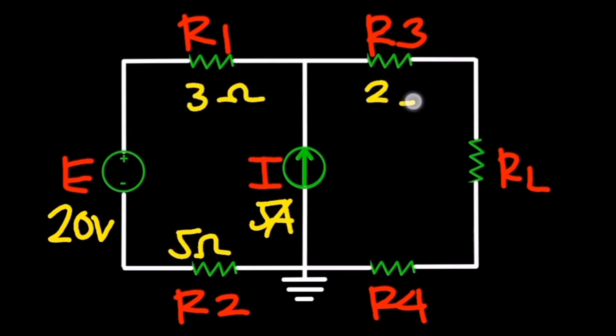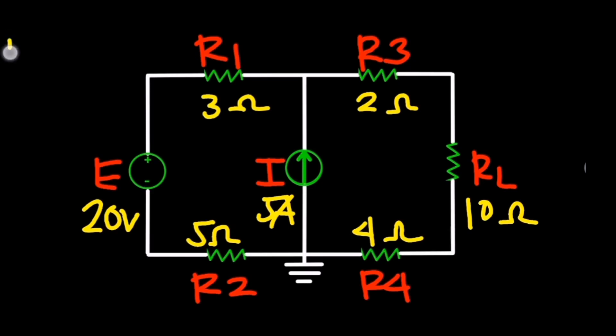In the circuit we have before us, we'll apply Norton's and Thevenin's theorems. First, we need to find Norton's equivalent resistance, which happens to be the same as Thevenin's equivalent resistance. To do this, we'll mark points A and B in the circuit.